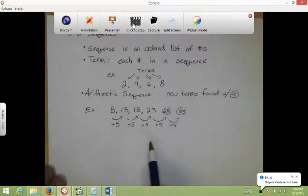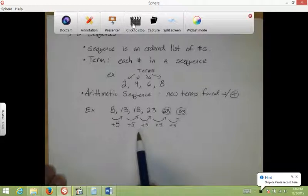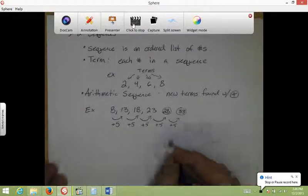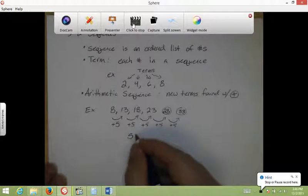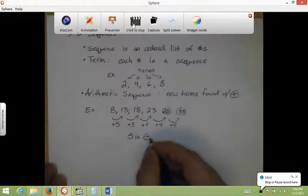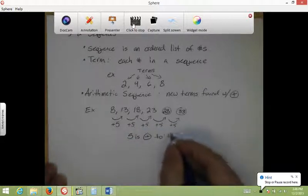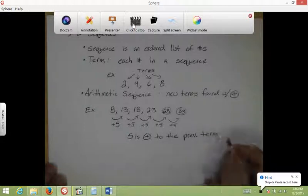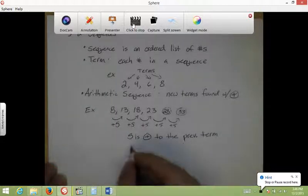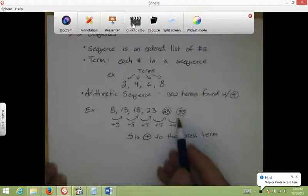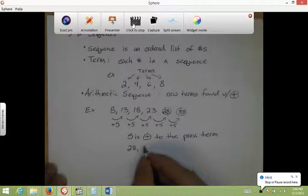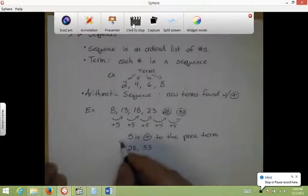So the book is going to ask you to describe the relationship or describe the pattern. So the way you would do this properly is you would say 5 is added to the previous term. And if they said what are the next two terms, we figured out it's 28 and 33.